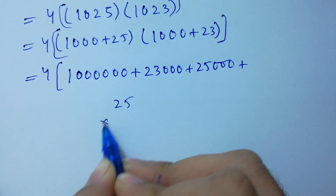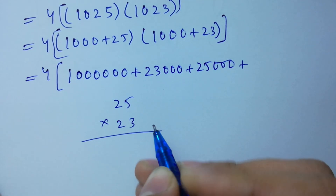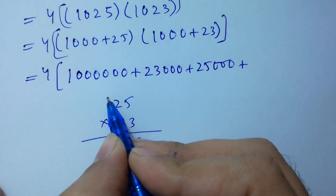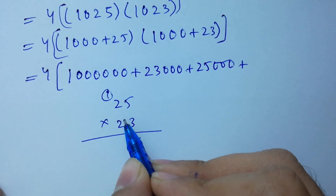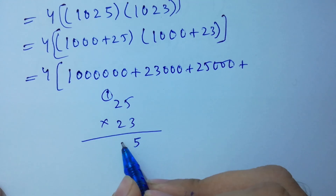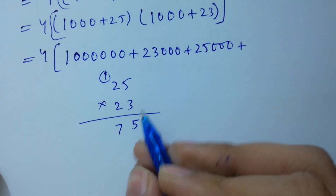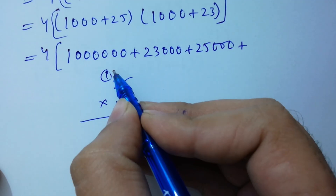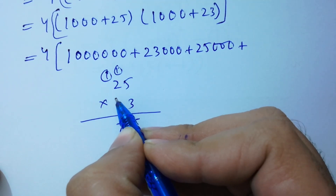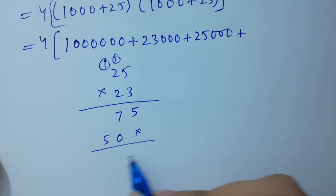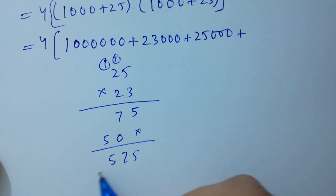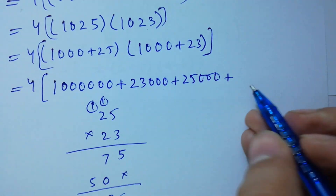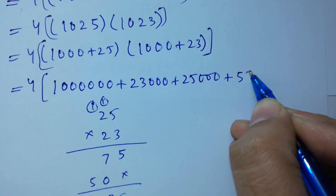Now computing 25 times 23: 5 times 3 is 15, write 5 carry 1; 3 times 2 is 6, plus 1 is 7; then 2 times 5 is 10, write 0 carry 1; 2 times 2 is 4, plus 1 is 5. So 25 times 23 equals 575.